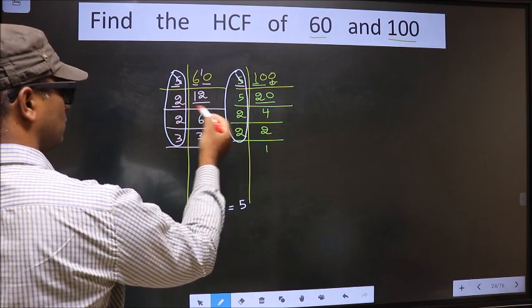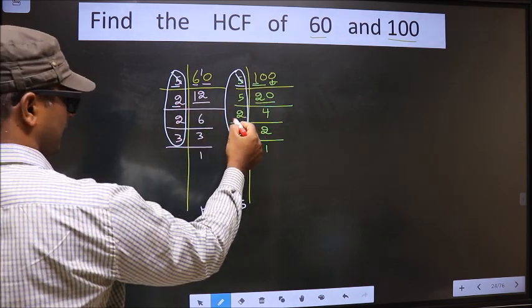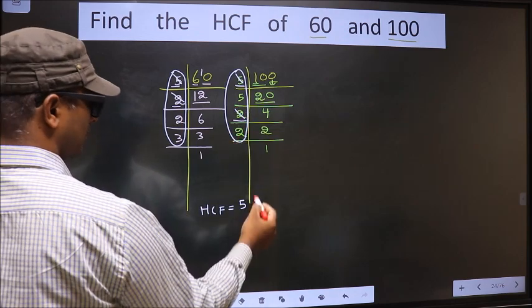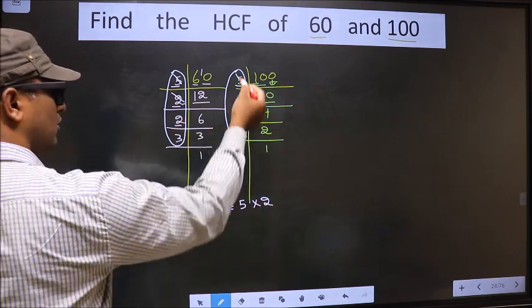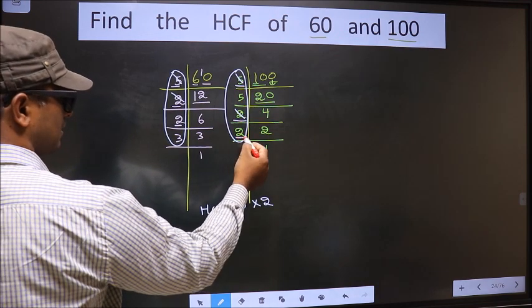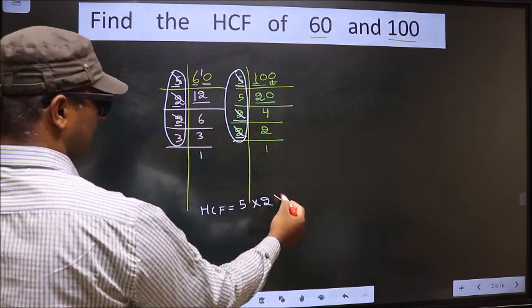Next, number 2, do we have 2 here? Yes, so you cut 2 right here. Next, number 2, do we have 2 here? Yes, so you cut 2 right here.